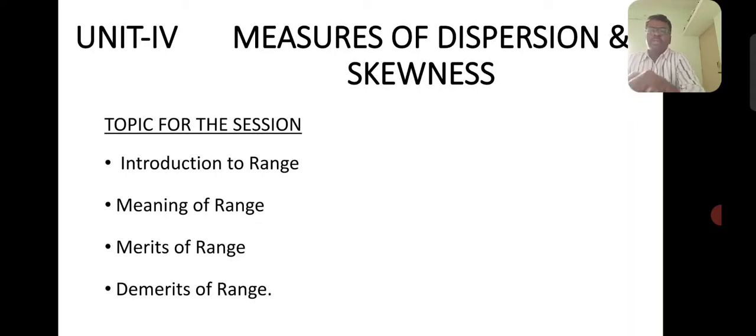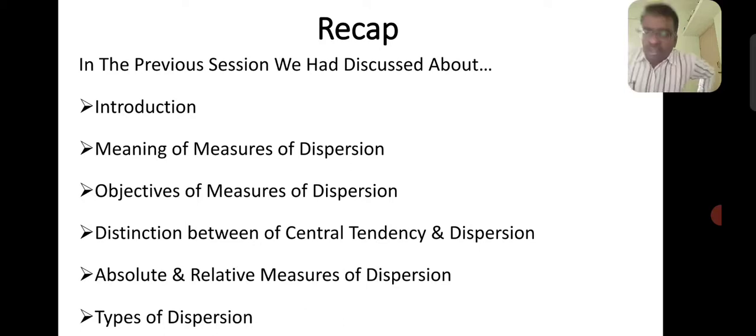In the last session we discussed measures of dispersion and objectives. Then we discussed about the distinction between central tendency and dispersion, what is an absolute measure of dispersion and relative measure of dispersion. We also learned about the various types of dispersion. There are four different types of dispersion: one, range; second, quartile deviation; third, mean deviation; and finally, standard deviation.